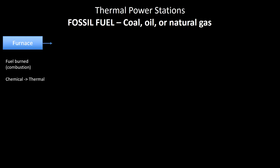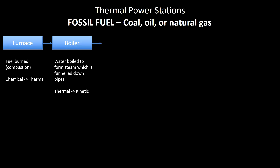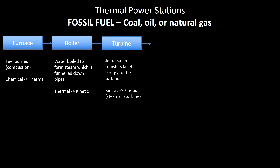You have a furnace where the burning or combustion takes place, and the energy transfer there is chemical energy in the fuel to thermal. You have a boiler where the water is heated and turned to steam, and that basically takes that thermal energy and effectively turns it into kinetic, because the steam is funnelled down a pipe. The turbine takes the kinetic energy of the steam and transfers it to itself — though not all of it, so this isn't a 100% efficient process.